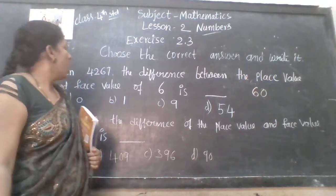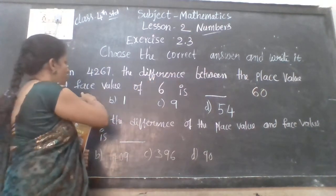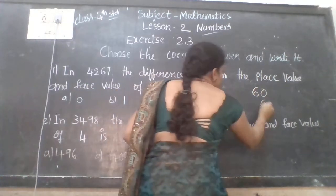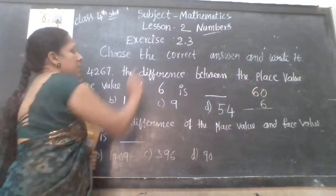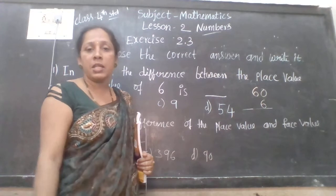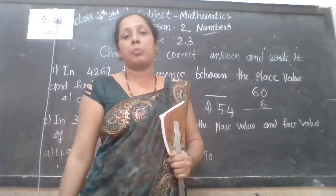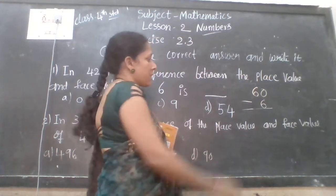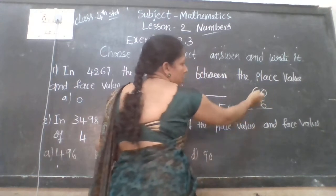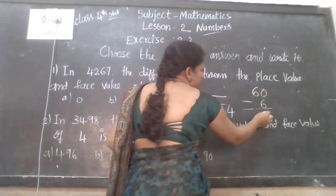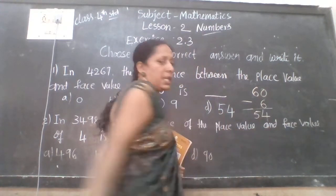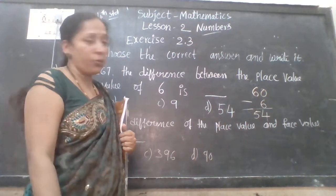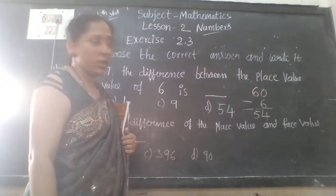How to find this out? Place value of 6 is 60, and face value of 6 is 6 itself. The difference between them — difference means the answer of subtraction. So subtract: 60 minus 6. You cannot subtract 6 from 0, so borrow — 10 minus 6 is 4, and 5 becomes 5. Answer is 54. The difference between place value and face value of 6 is 54.